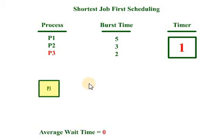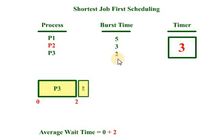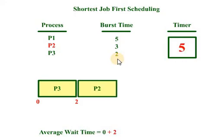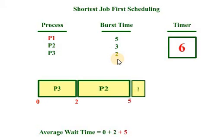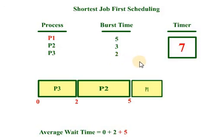Starting from P3, it will complete its execution at 2 seconds. Then P2 will be assigned to the CPU and it completes its execution at 5 seconds. Finally, P1 will be assigned to the CPU, which completes its execution at 10 seconds.